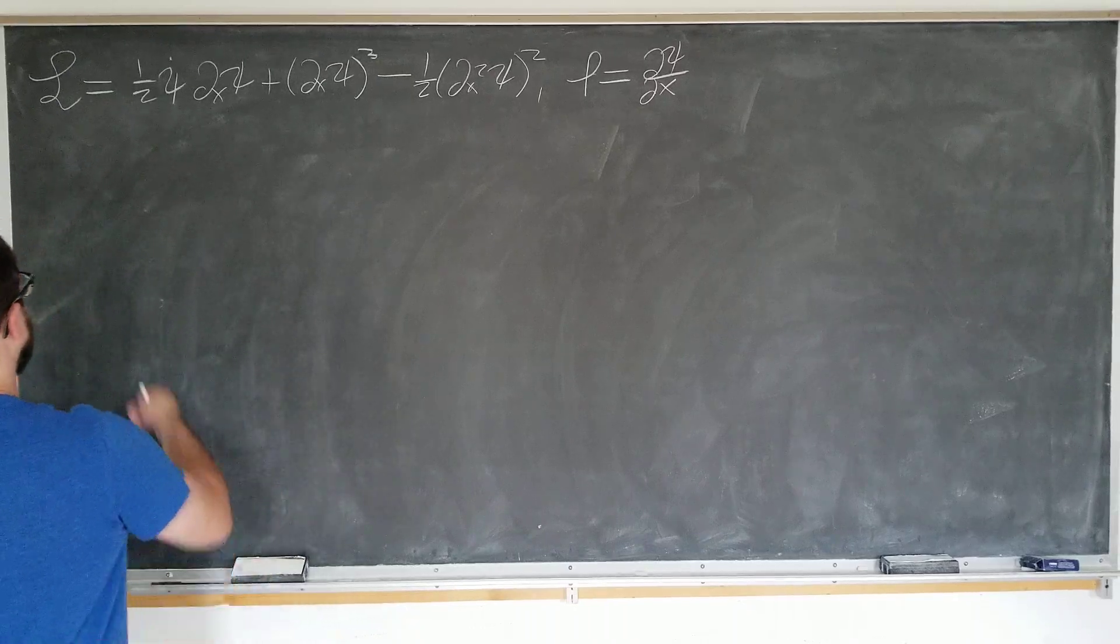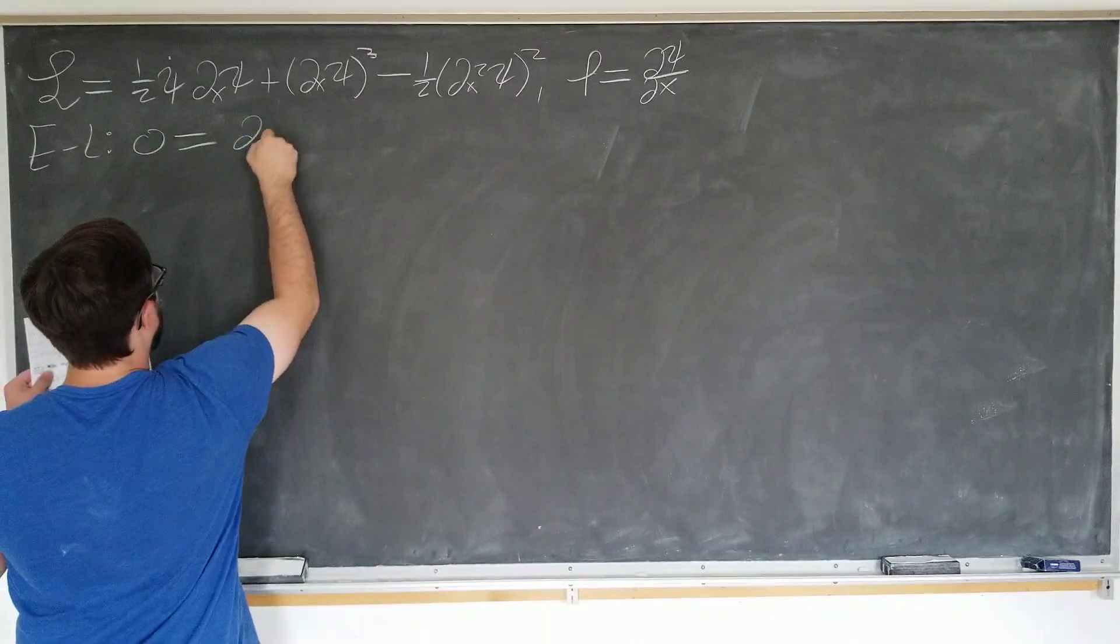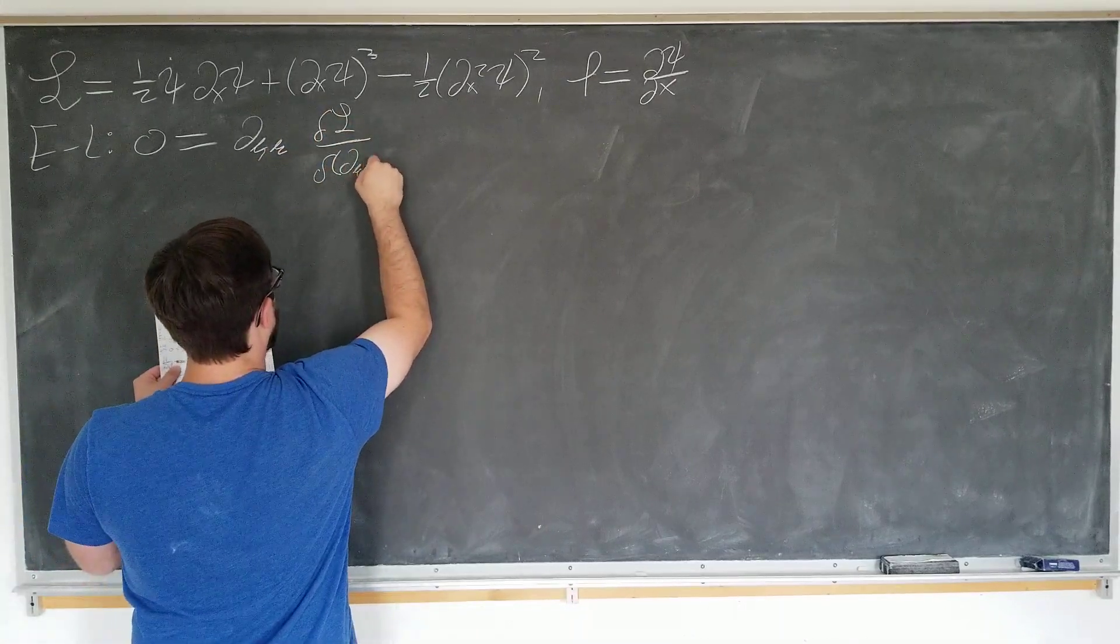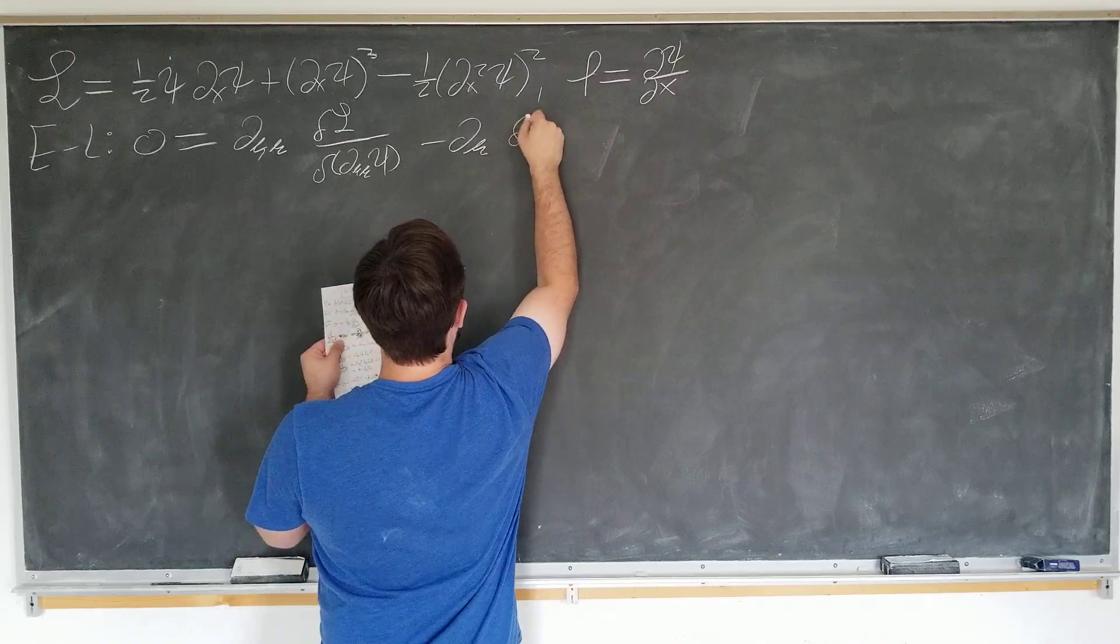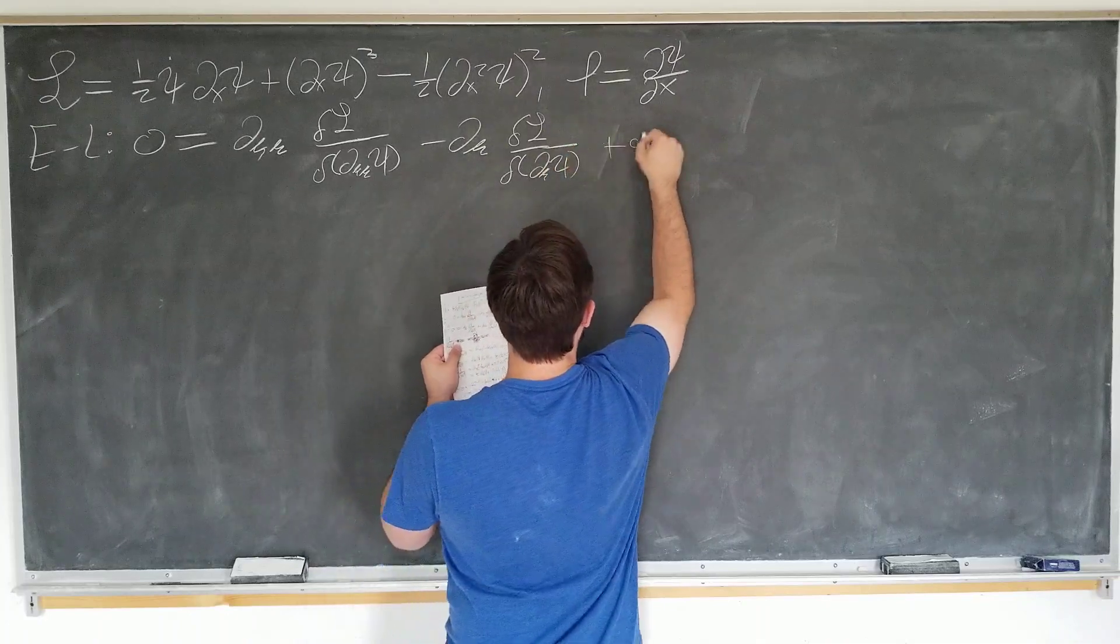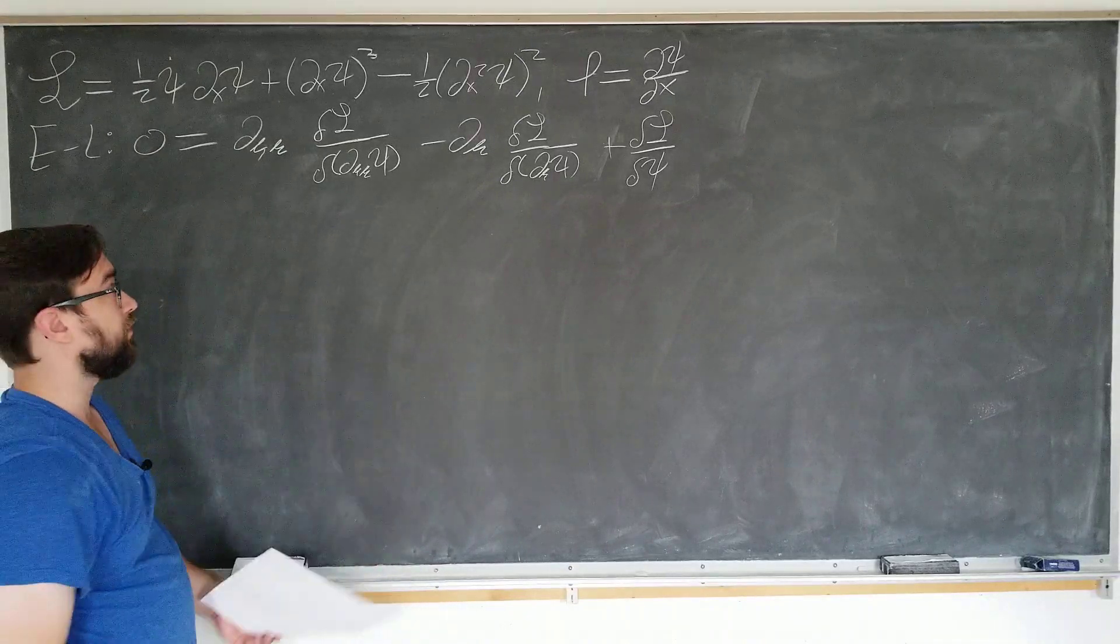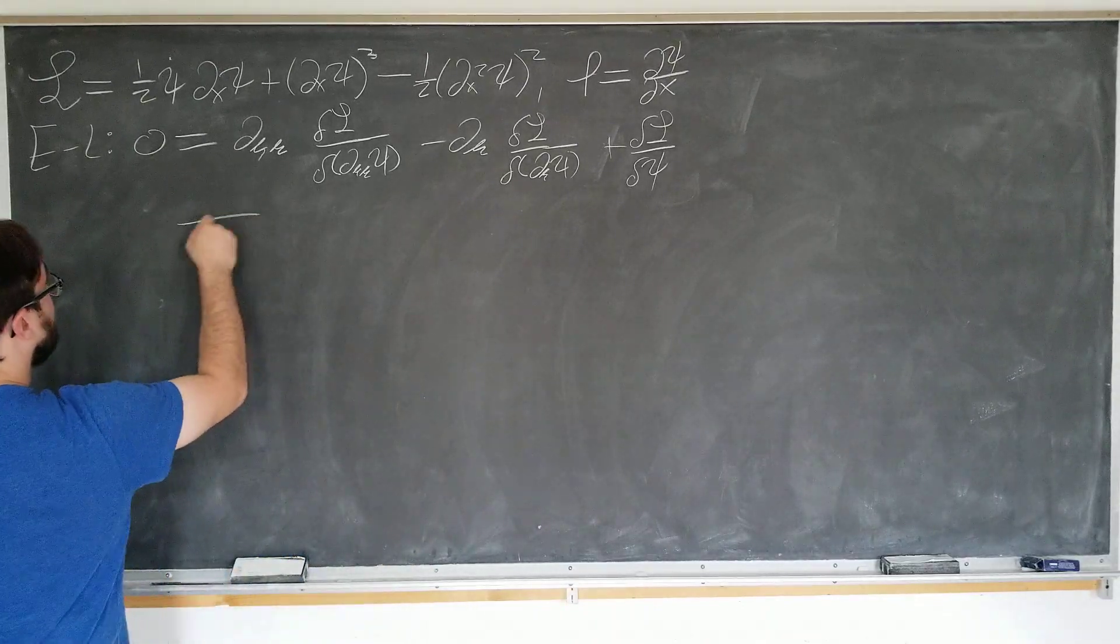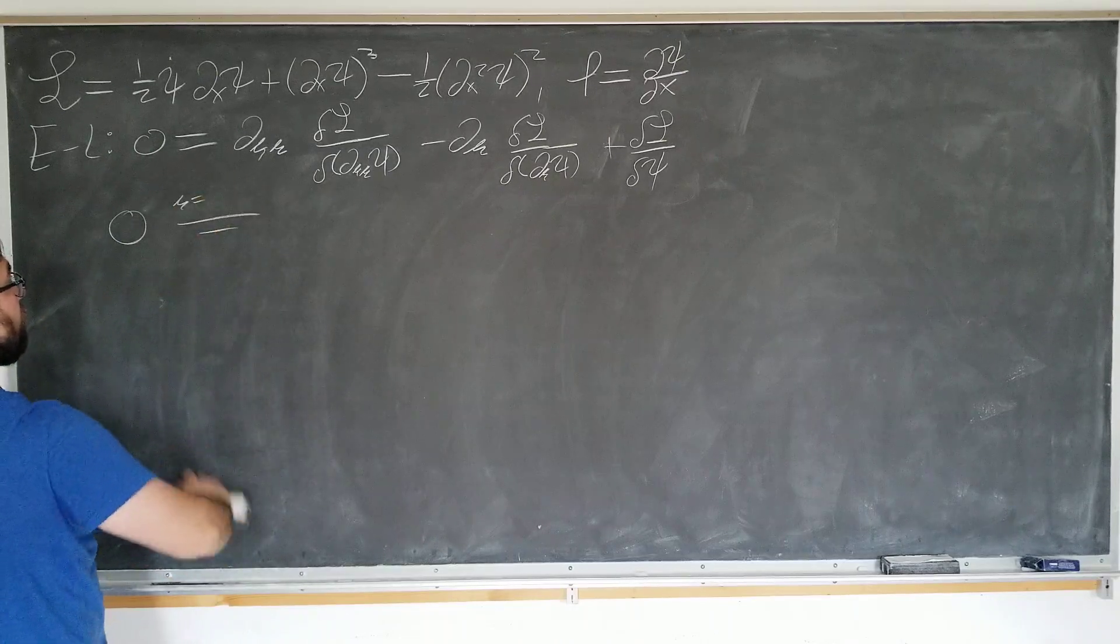So let's write down the Euler-Lagrange equations now. They tell us that 0 is equal to second derivative of variational of L with respect to mu mu minus d mu variational of L with respect to d mu psi plus delta psi by d phi. Now the mu's just stand for t and x. It's a shortcut. We've employed Einstein's summation convention to sum over x and t's. So it tells us 0 is equal to, for mu equals x and t, we include them explicitly.